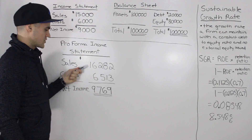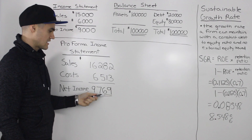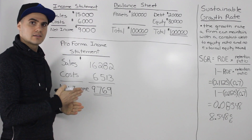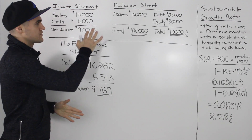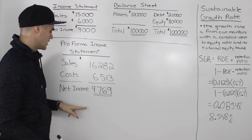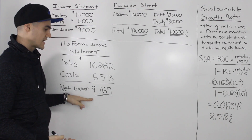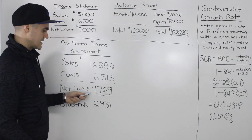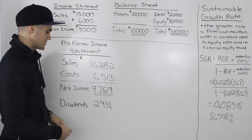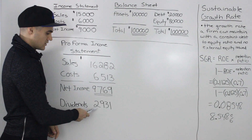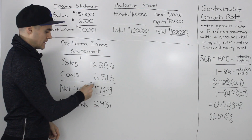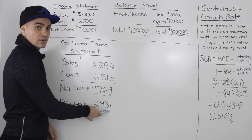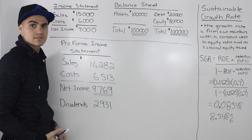Subtracting the cost from the sales, we get a final net income figure of $9,769. We calculated the payout ratio from the previous financial statements to be 30%, so we know that 30% of this net income is going to be paid out as dividends. We can calculate that amount by taking the net income and multiplying it by 0.3, giving a dividend amount of $2,931.